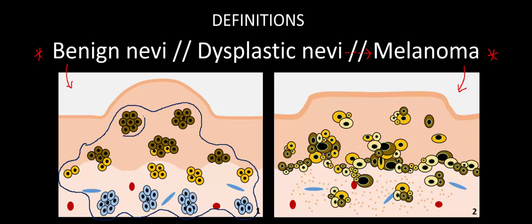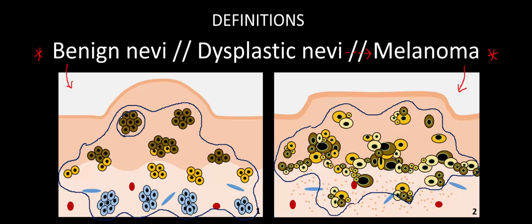These individual clusters of melanocytes are fairly well demarcated and arranged in a very orderly fashion, which is in contrast to what's going on in the melanoma. Notice that these melanocyte clusters are arranged in a fairly asymmetric distribution, and moreover these individual melanocyte clusters vary in shape and size — some smaller clusters and some larger clusters of cells. So the overall architecture is a bit more irregular in the melanoma.